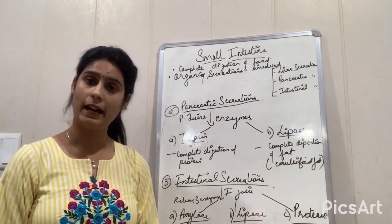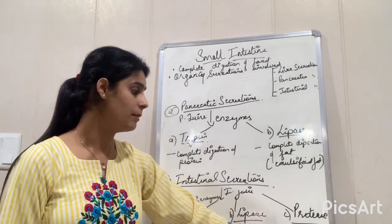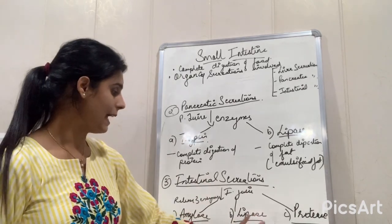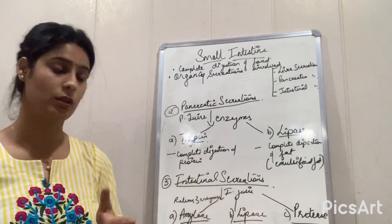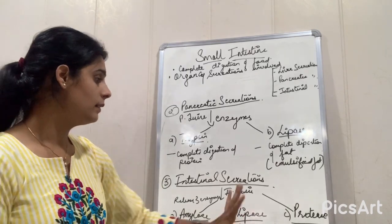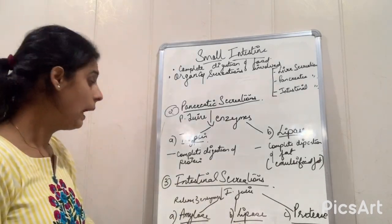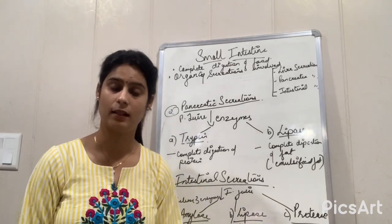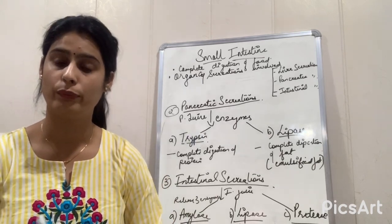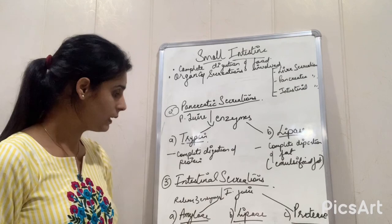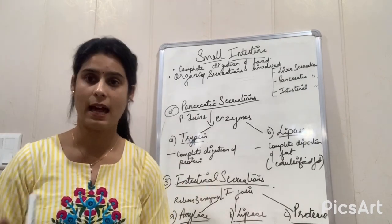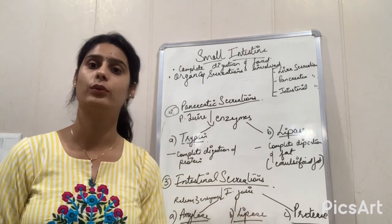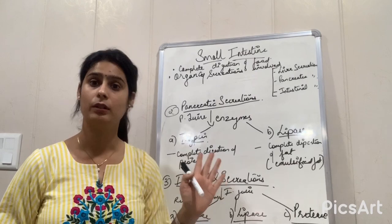The three intestinal enzymes are amylase, lipase, and protease. Amylase breaks down the leftover starch, lipase breaks down the remaining fat into finer particles, and protease breaks down the protein. With these three enzymes acting, the food is completely digested. That is why the complete digestion of food occurs in the small intestine.